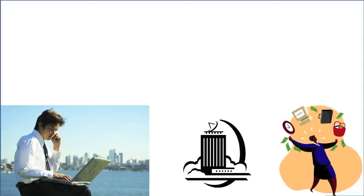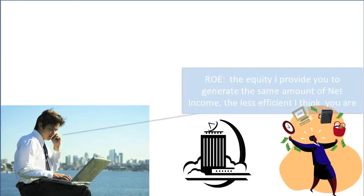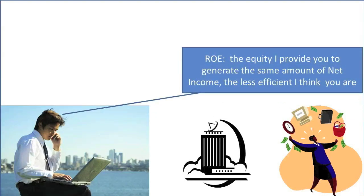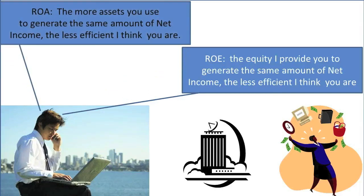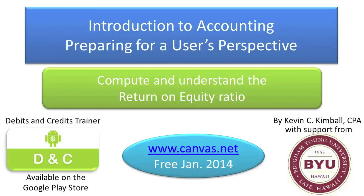One deficiency of the ROE is that it only compares net income to common shareholder equity, not to total assets. If a company is highly leveraged, that comparison will result in extremely high ROEs. However, if the same net income were compared to the total assets that management had to work with, as is done in the Return on Assets ratio, management may not appear to be very efficient in its use of assets to generate income. In other words, use the ROE with caution and use it alongside other ratios such as Return on Assets (ROA) to gain a fuller understanding of management efficiency. See you next time.